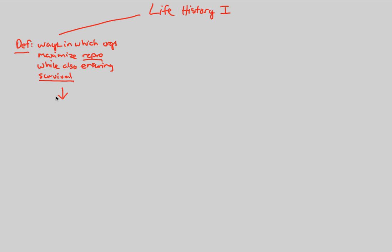Specifically, this type of study of life history is all about looking at the trade-offs between survival and reproduction, just like we've constantly been saying in the past couple of lectures. In order to figure out how we can maximize reproduction while also ensuring our survival, we have to look at a couple of main variables.